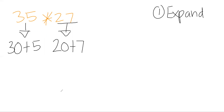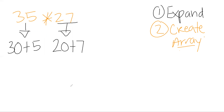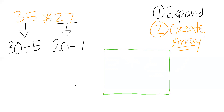Our next step is to create the array — the area model. The area model represents the array, and I want to make that connection clear. An array has rows and columns. I'll draw a rectangle that has rows and columns. With the commutative property of multiplication it doesn't matter what order I put the numbers in, but I always like to take the first number and treat it as the columns.